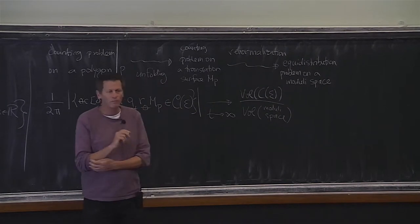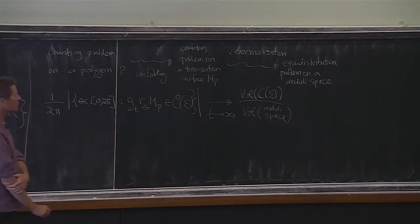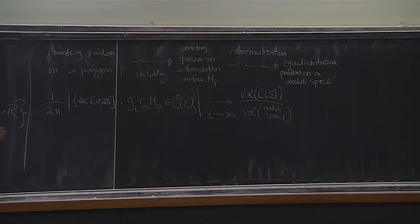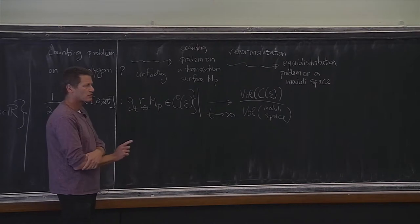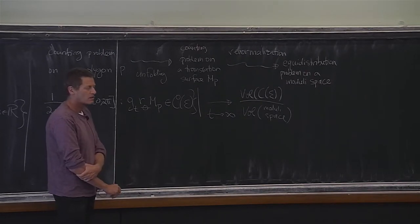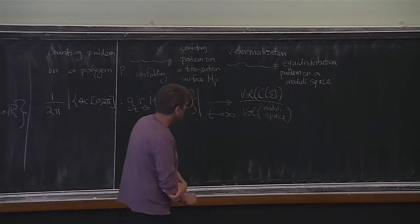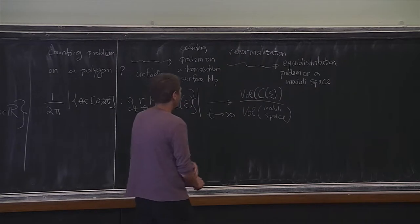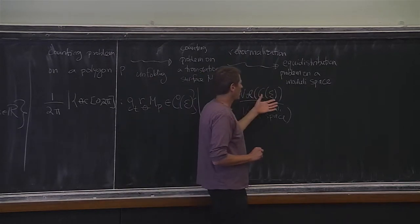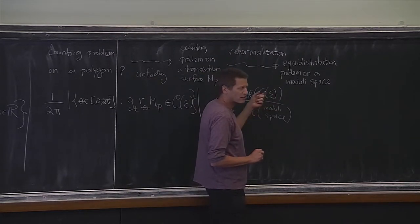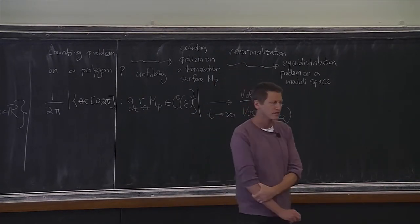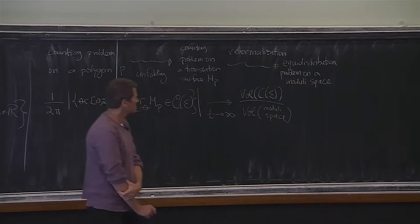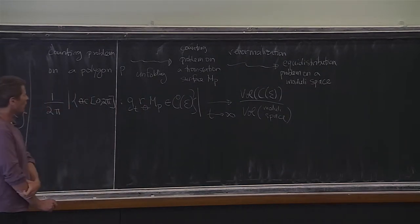I'm not going to remind you why this is the problem of interest. Those interested can ask me or John later. C_epsilon is the set of surfaces on your moduli space which have a straight segment of length less than epsilon.